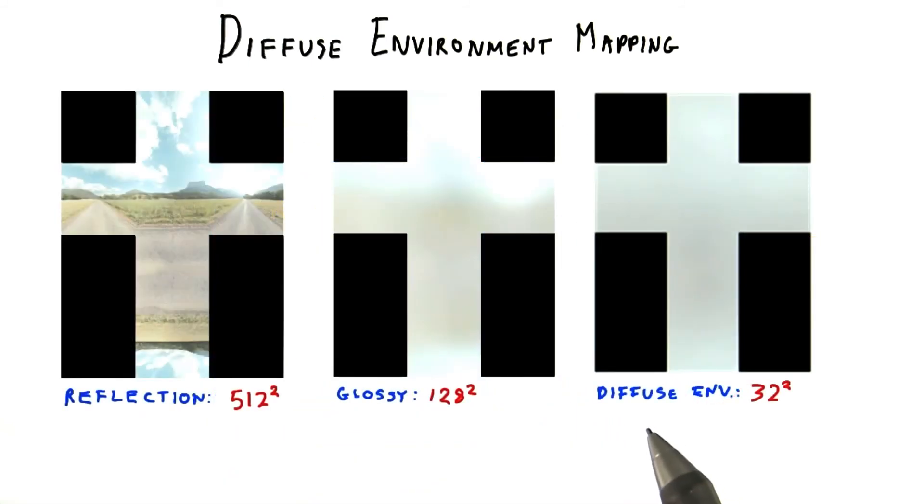One other advantage we have is that the diffuse map can be quite low resolution. While this original sharp environment map had cube faces that were 512 by 512 texels, and our gloss map was 128 squared, the diffuse map is usable at only 32 by 32 texels. Nonetheless, it can be expensive to compute the diffuse map, so what we do is the same as for the glossy map. We compute the texture in advance with some image processing software. This gives us the texture we need to light the scene. During rendering, we just use the shading normal to find the overall contribution of the environment's lighting to the surface fragment.